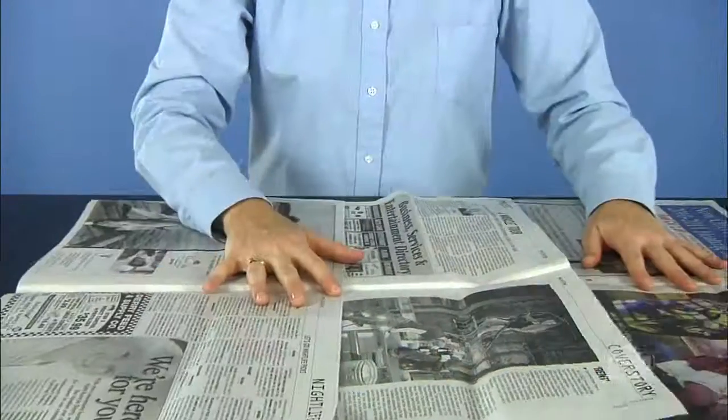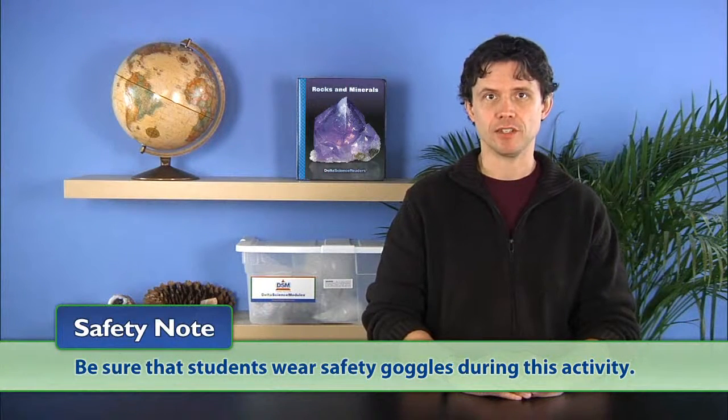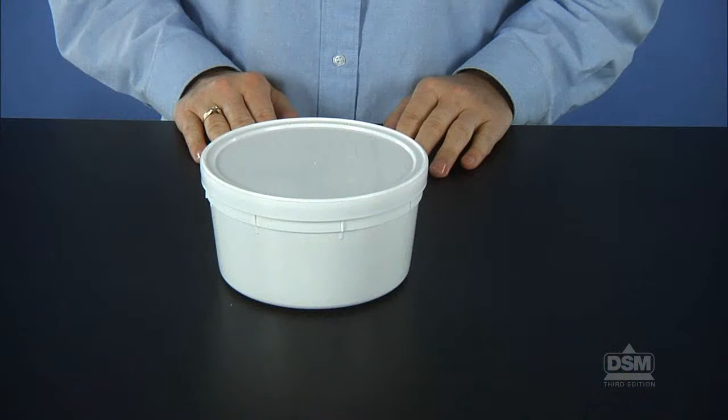Next, divide the class into groups of four and instruct groups to cover work areas with newspaper. Make sure that students wear safety goggles during this activity. Distribute activity sheet six to each student and a container of materials to each group. Then instruct students to perform the acid test on each mineral specimen as demonstrated.